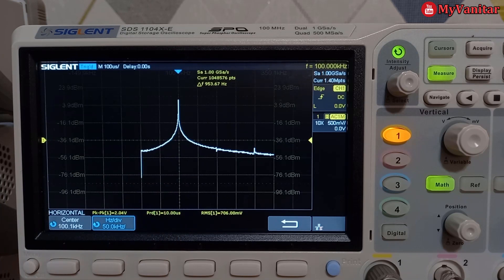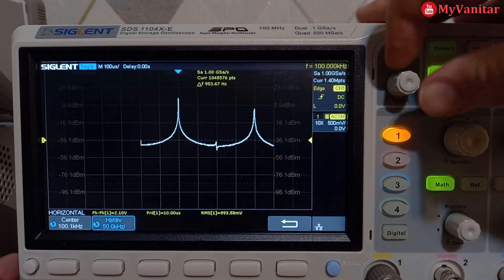What about a square wave which contains several high frequency harmonics? So I just change the signal to 100 kilohertz square wave.